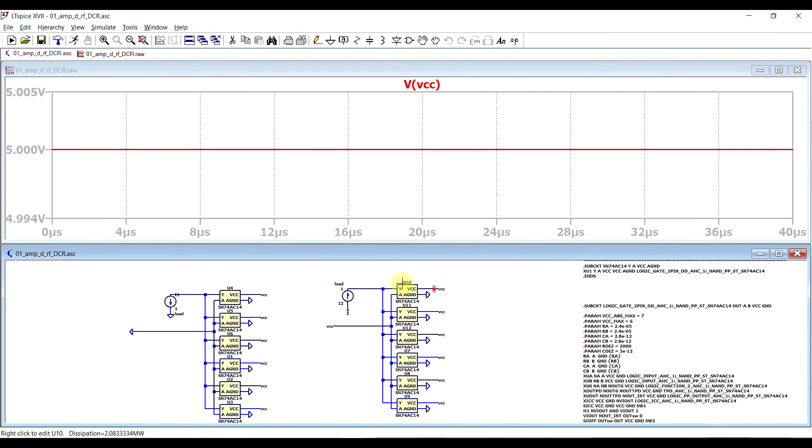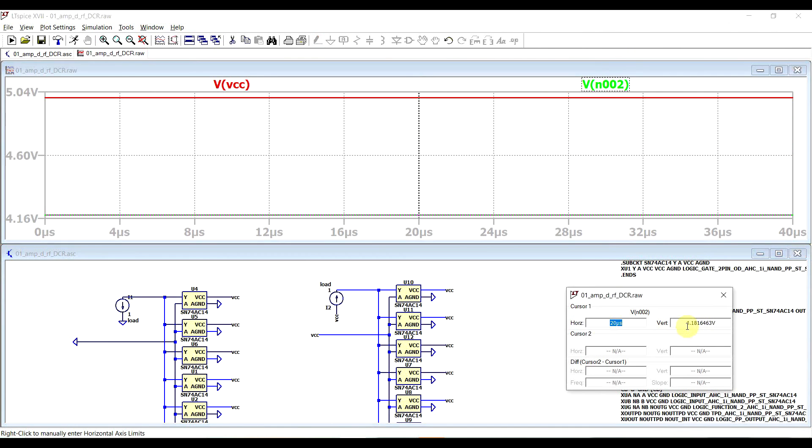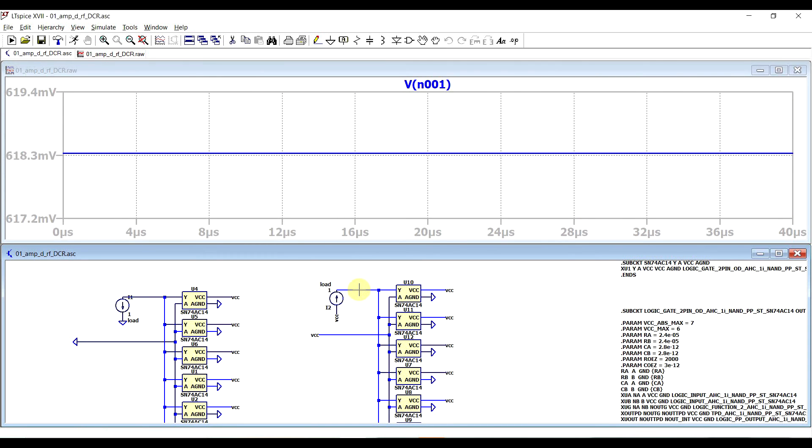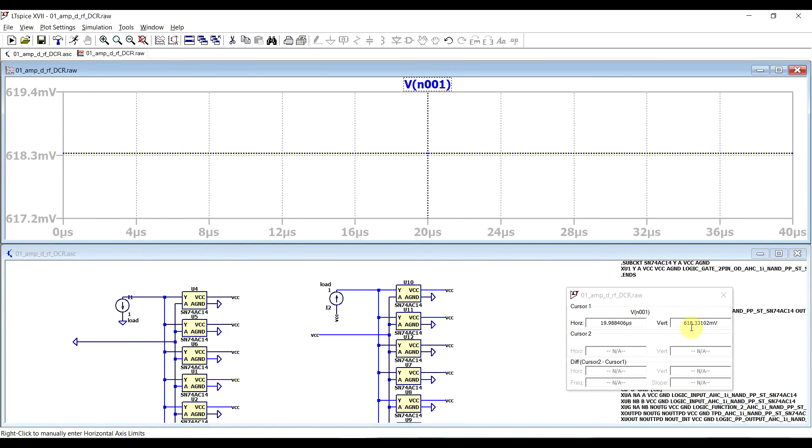If we are sourcing 1 ampere from 6 gates, we are getting an output voltage of 4.18 volts. So the difference between this and the supply voltage is 818 millivolts. So at 1 ampere, this is equivalent to a series resistance of 818 milliohms. On the other side, if we are sinking this one current through the logic gates, we are getting an output voltage of 618 millivolts. So again, at 1 ampere, this means that the equivalent series resistance is 618 milliohms.